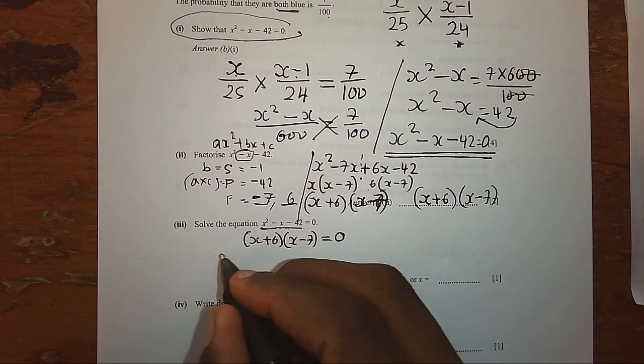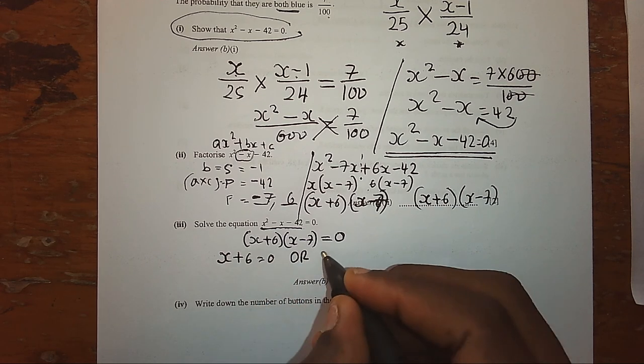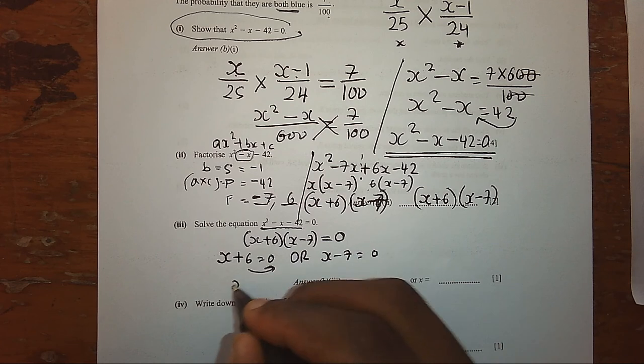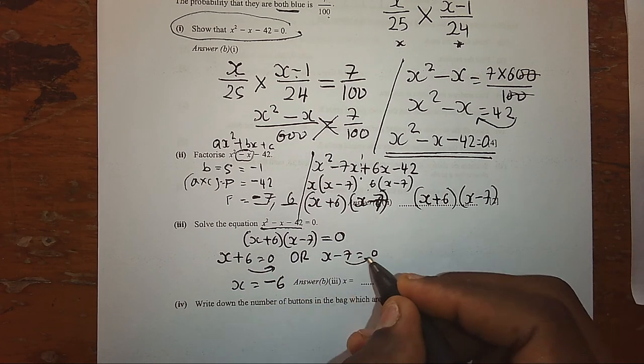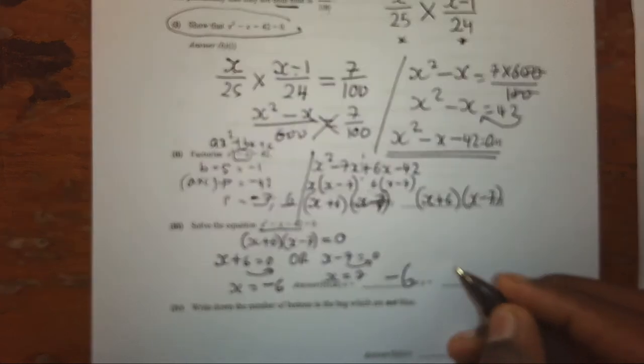This first number should be 0, or this second number should be 0. When you take 6 to the other side, it shall be negative 6. When you take 7 to the other side, you shall get 7. Hence, the two solutions would be negative 6 and 7.